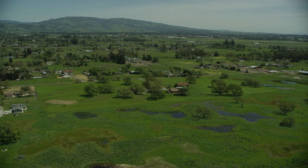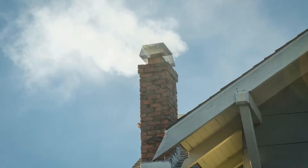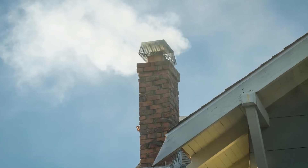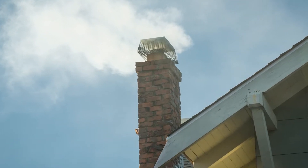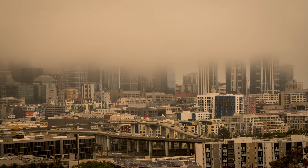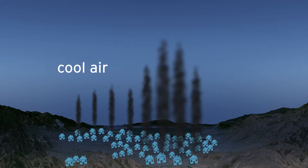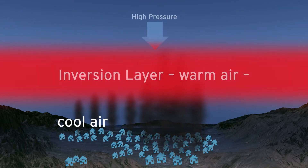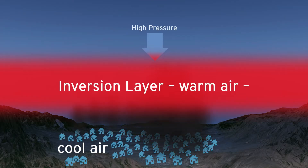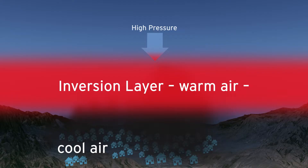Air quality is determined by the amount of air pollutants combined with weather conditions at any given time. In wintertime, high pressure, light winds, and low temperatures can create a temperature inversion, causing air quality to become unhealthy due to pollution, like wood smoke, building up at ground level.